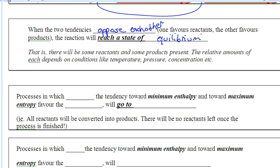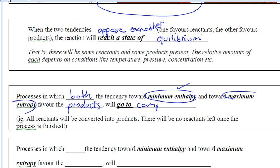In the second scenario: if the tendency toward minimum heat is favored and maximum entropy is favored, so both the tendency toward minimum heat and maximum randomness favor products, this reaction will go to completion. If the products are both the most random and the least energy, that is very, very favorable. So this reaction will react 100% and go to completion — all reactants will be converted into products with no reactants left. This is the ideal situation for a reaction.